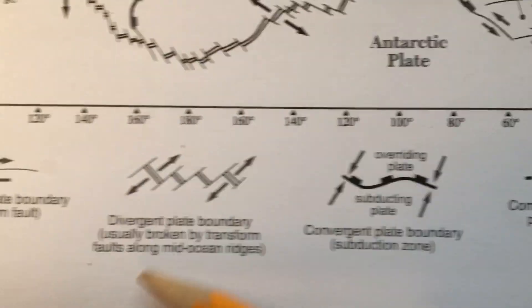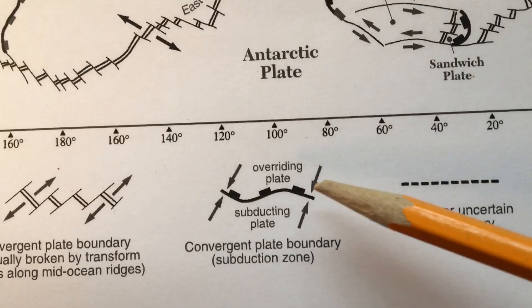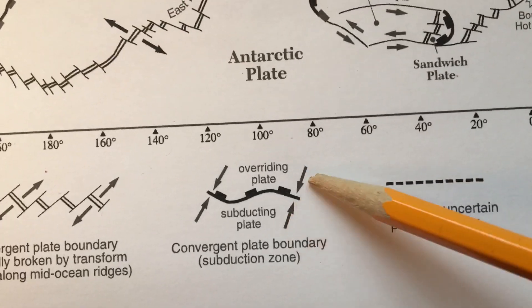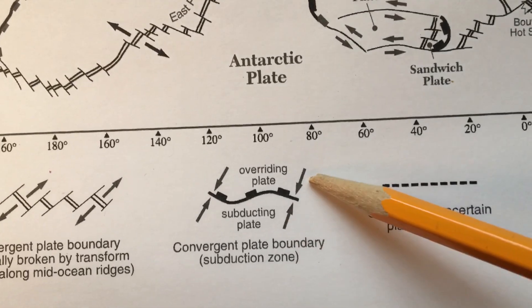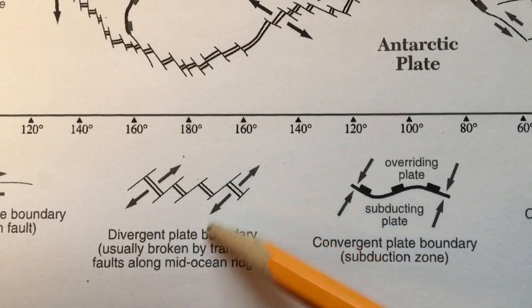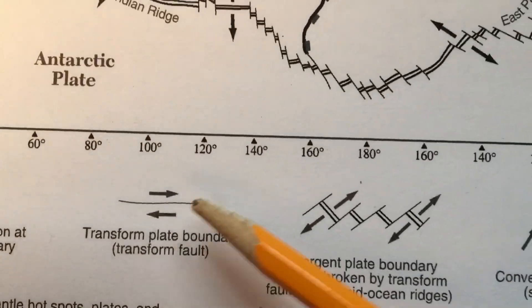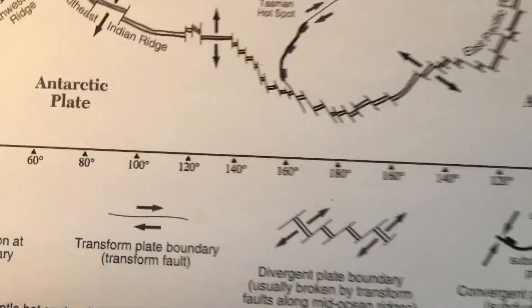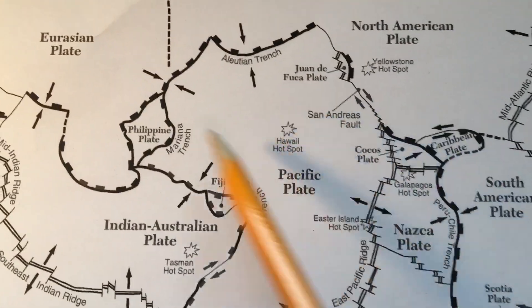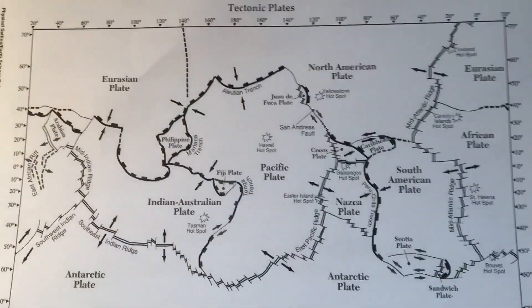We're going to get into a pretty good level of detail on these over the next two weeks. Convergent — what are the arrows doing there, what are the plates doing there? Divergent — what are the plates doing there? And Transform — what are the plates doing there? So compare that with some of the boundaries you see. And again, you'd be coloring all these if we were really in class, but we're not.